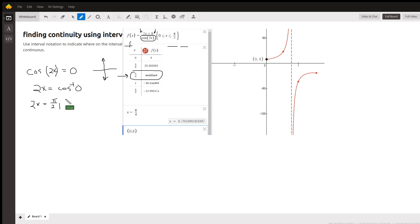So 2x equals π over 2. Of course we could keep going on forever this way, but if we start dividing by 2 to solve for x we get π over 4, 3π over 4.